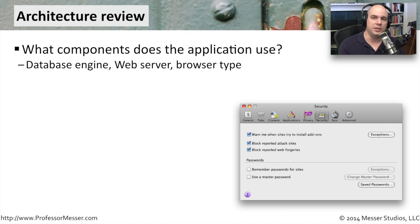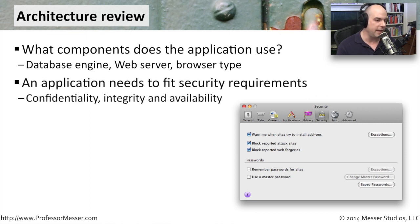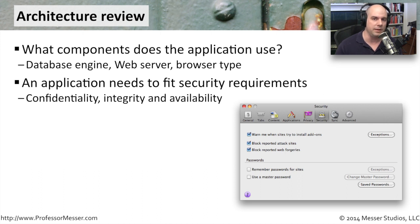An application isn't just about the code itself — there are all these other systems that revolve around the application: web servers, database servers, application servers, and middleware that talks to a mainframe. There are so many different components to the way these applications work, so we have to understand every step along the way and think about the security concerns for each one of these devices — the database, the web server, our clients, and the applications used by our clients. From a security perspective, we apply the broad security requirements of confidentiality, integrity, and availability to every single component of the application.